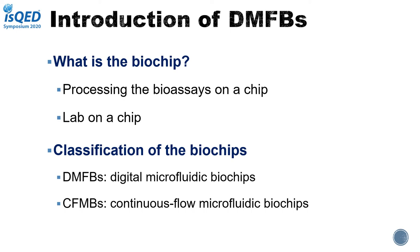According to the operation principles, biochips can be classified into two main types: Digital Microfluidic Biochips, DMFBs in short, and Continuous Flow Microfluidic Biochips, CMFBs in short. These two platforms have different structures and different operation principles. DMFBs perform bio-assays by controlling discrete reagent droplets to perform operations such as dispensing, mixing, and splitting, while CMFBs are performed by controlling the flow. In this paper, we mainly focus on DMFBs.